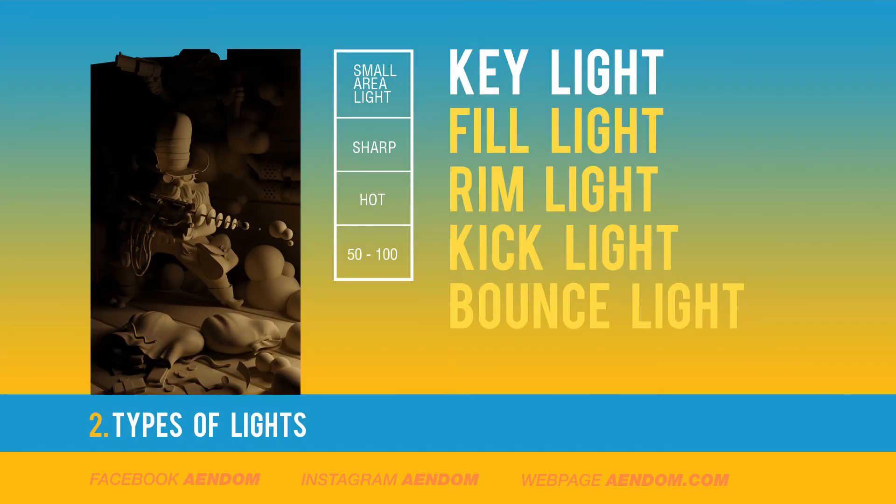The key light is the most important light in the scene. You need to explain the shape of the scene with this light. For this I use a small area light so it can give a sharp shadow. I also use a hot temperature with a lot of intensity, between 50 and 100.